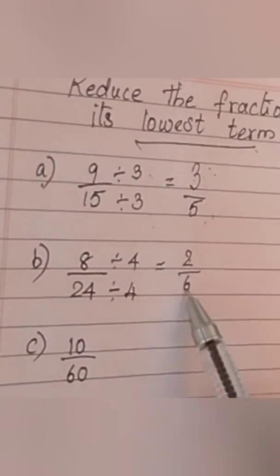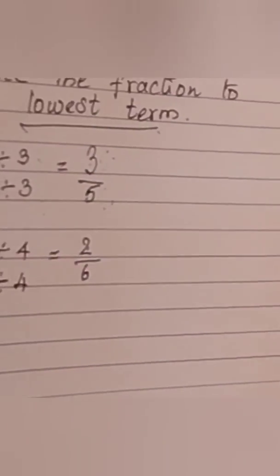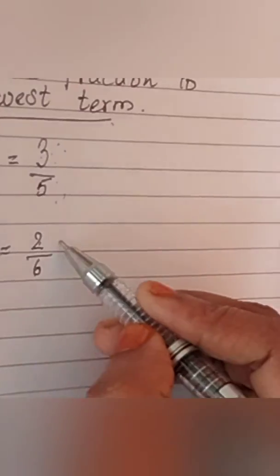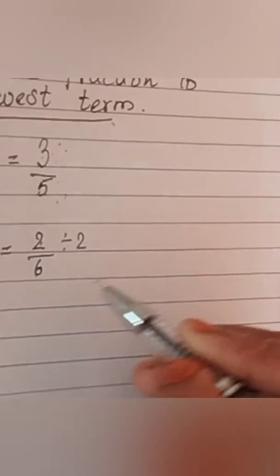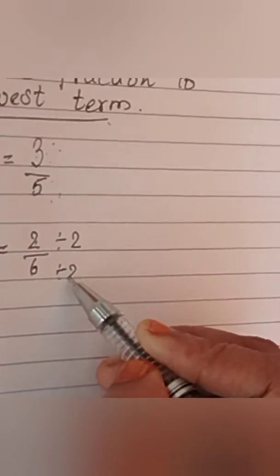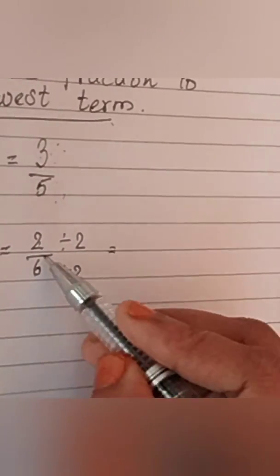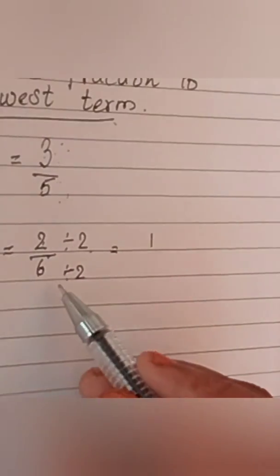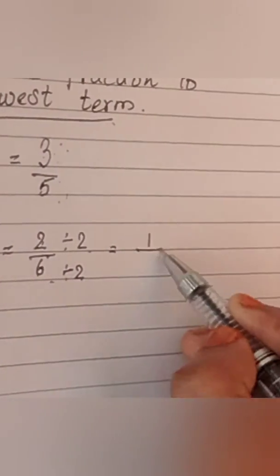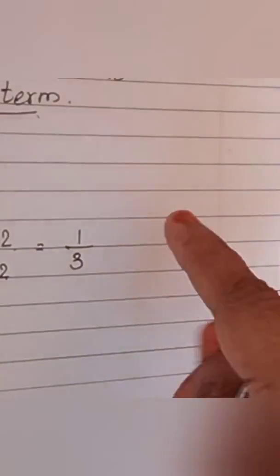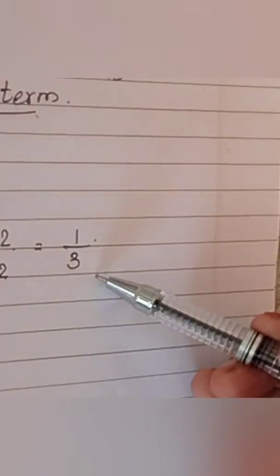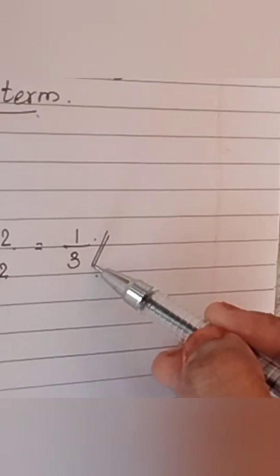Now, again 2 and 6 are commonly divisible by 2. So, divide by 2 on numerator and denominator. 2 1s are 2, 2 3s are 6. So, 1 by 3 is the answer. And, we cannot divide this again. So, this is the answer.